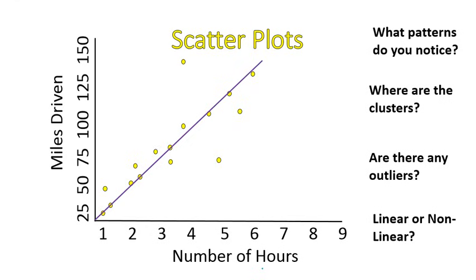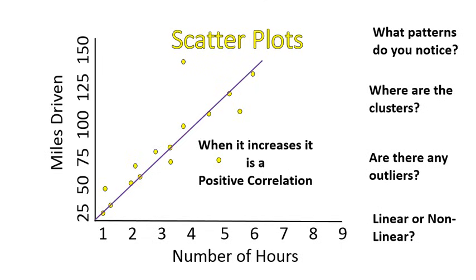The outliers are the exceptions to the rule — this person drove four hours and covered 125 miles, which most people probably don't do that quickly. Some people are driving a little bit slower, and that's fine. Outliers don't discredit our data — they're just something we have to recognize. The clusters tend to be around the line. When a line increases from left to right, it's called a positive correlation: the more hours you drive, the farther you drive.